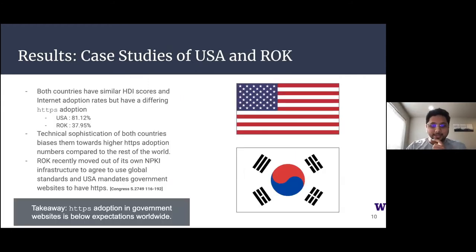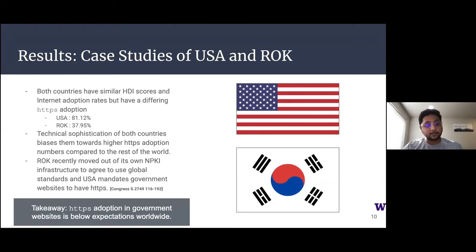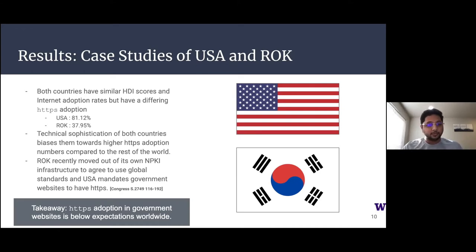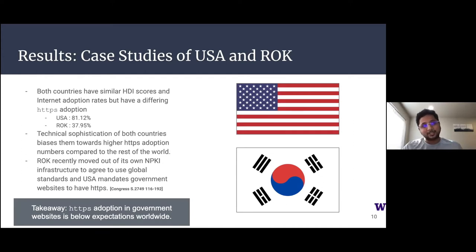We were interested in why two technologically sophisticated countries with high human development index scores and high internet adoption rates were so different. We performed a case study comparing the United States and the Republic of Korea. Historically, South Korea operated their own public key infrastructure for national security. As the web grew and became more connected, South Korea joined the global web public key infrastructure in 2018. But in our measurement, many of these websites continue to use private national certificate issuers considered invalid and insecure by all popular browsers, operating systems, and security software because of constant violations.